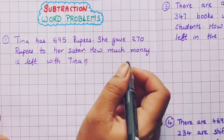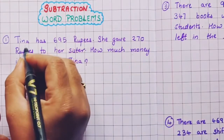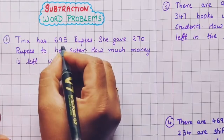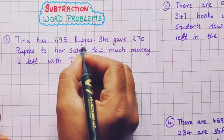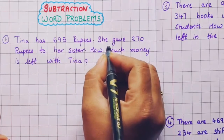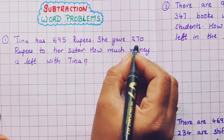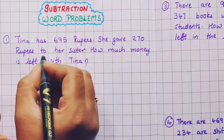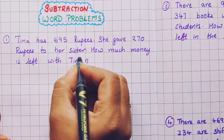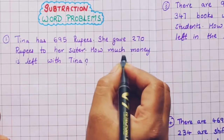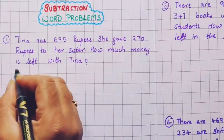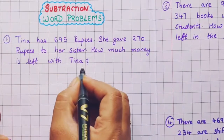Now let's see the first problem. Tina has 695 rupees. She gave 270 rupees to her sister. How much money is left with Tina?